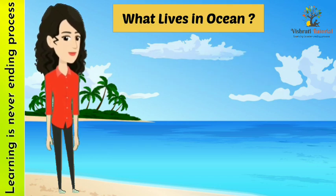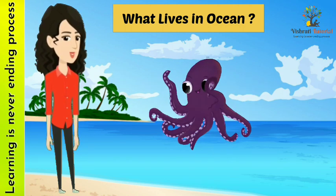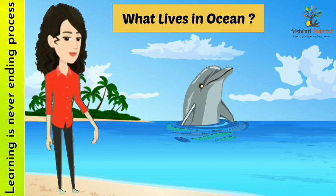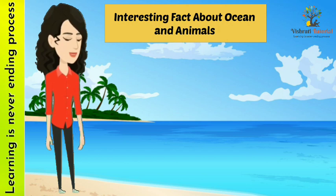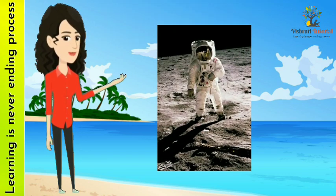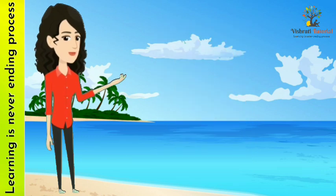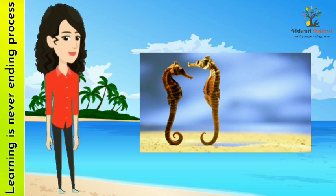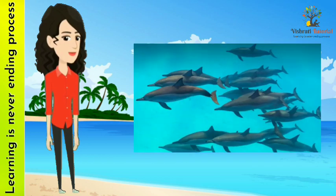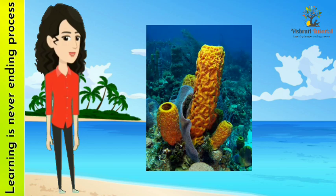Interesting facts about ocean and ocean animals. Humans stepped foot on the moon before they touched the deepest point of the ocean. Whales are the largest mammals in the ocean. Seahorses like to swim in pairs or together. Dolphins live in groups called pods. Sea sponges have no head, mouth, eyes, bones, heart, lungs, or brain — yet they are alive.